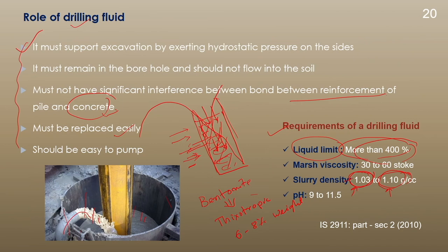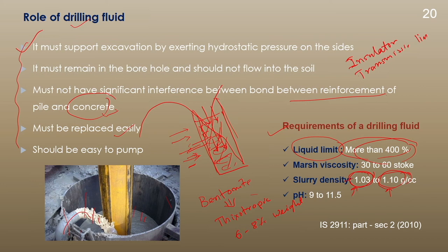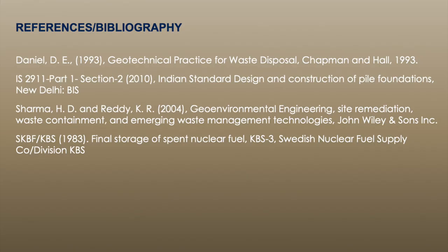Apart from these geotechnical applications, some clay soils like kaolinite or illite can also be used for other applications. Kaolinite can be used as an insulator for transmission lines, and also as porcelain to prepare different kinds of pottery. Sometimes bentonite is used to manufacture some medicines. These are the various engineering — particularly geotechnical — applications of expansive soil, particularly bentonite. These are the references used for this lecture. Thank you.